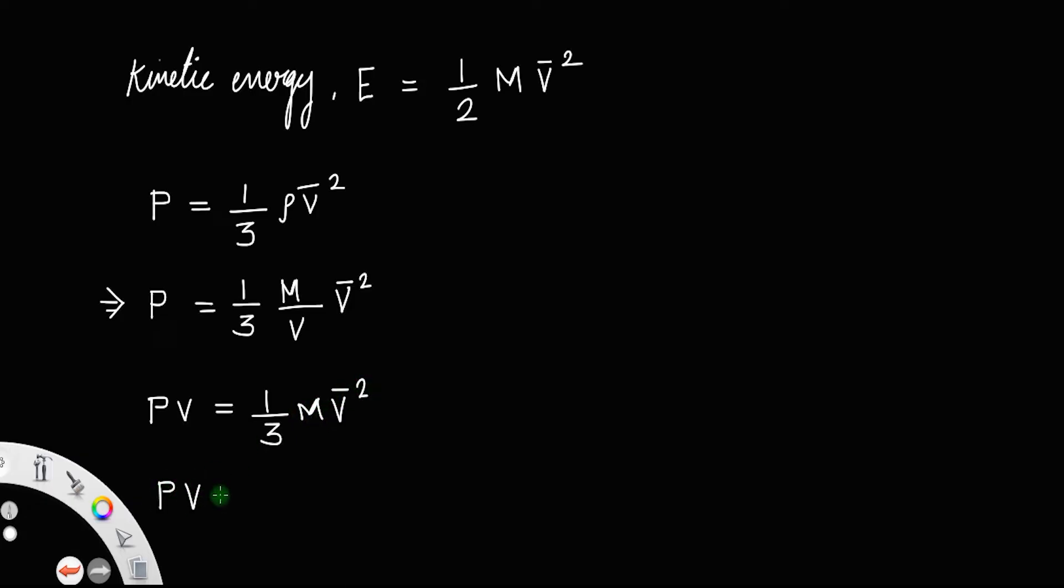And this can be written as p v is equal to 1 by 3. If you multiply it to the numerator and divide it with the denominator, the factor does not change, which means p v is equal to 2 by 3 into 1 by 2 m v bar square. So, this is equal to the kinetic energy E. So, p v is equal to 2 by 3 E.